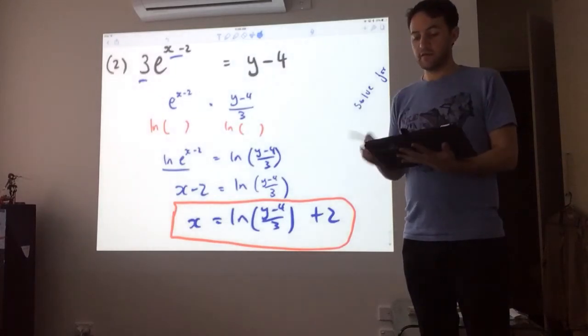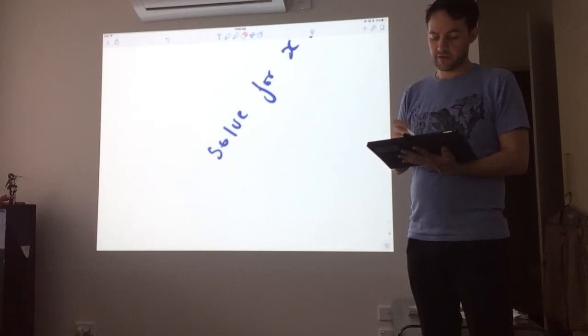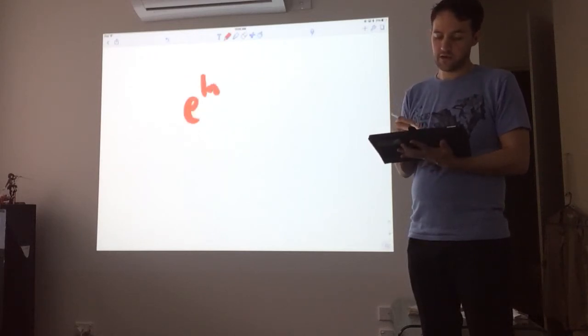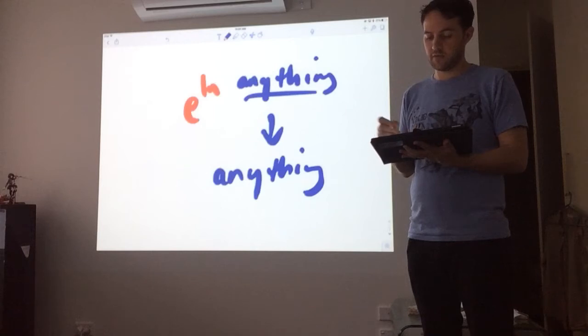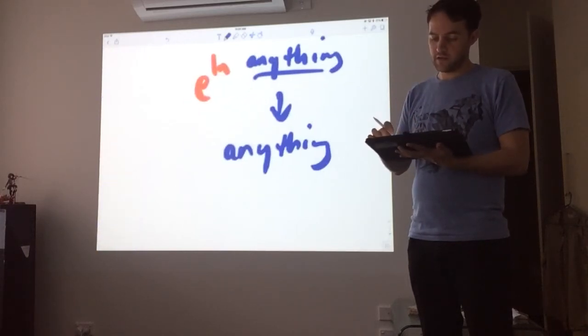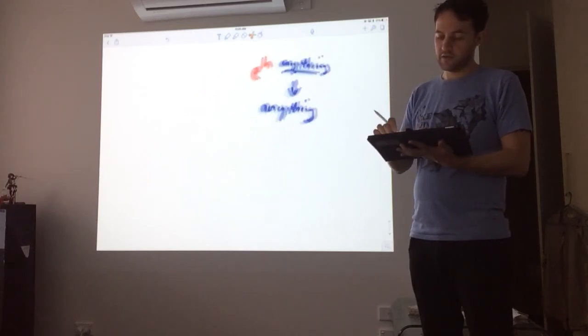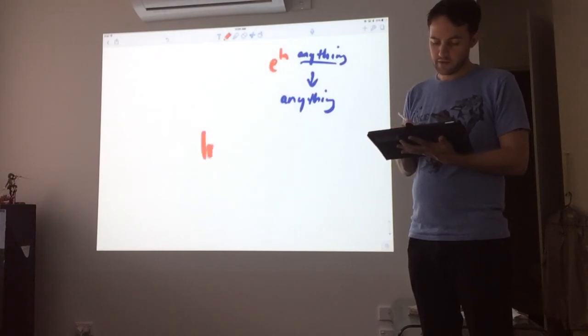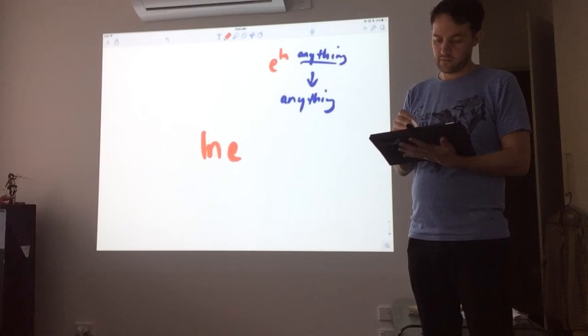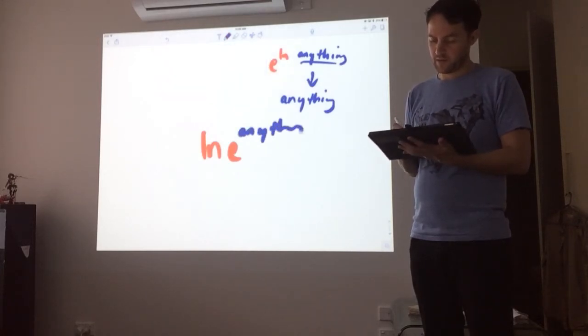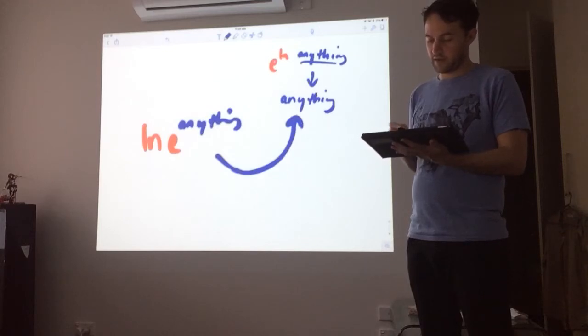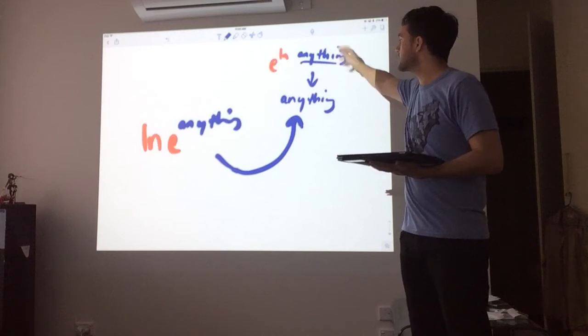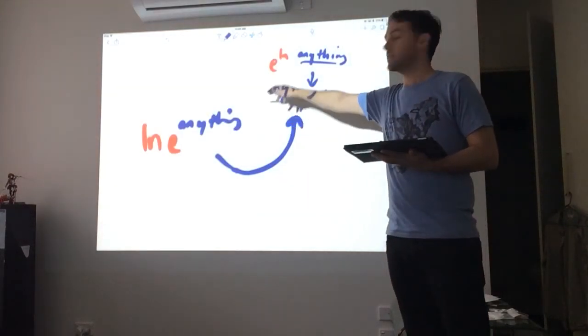Alright, so logs and e's, the key thing to keep in mind for these when solving for x or when doing anything is just e to the log of anything becomes anything. So whatever is in that area here, whatever that is, we get that. On the other hand, if we have the other way around, if we have log of e, log e to the power of anything, then in this case, again we get that same anything. So e to the log of some function, some internal function, equals that function. Log of e to that function equals that function.